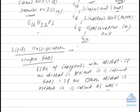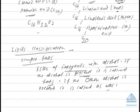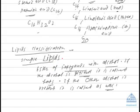Lipids are classified as simple lipids, compound lipids, and derived lipids. Simple lipids are esters of fatty acids with alcohols. If the alcohol is glycerol, the compound is called fats. If the alcohol is other than glycerol, the compound is called wax.